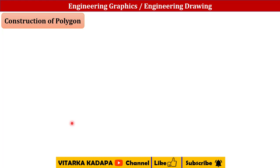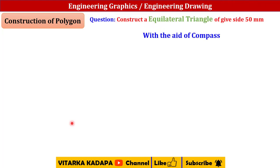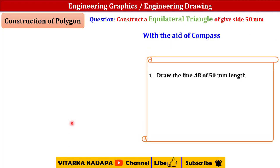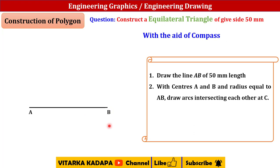Now let us construct an equilateral triangle of given side 50 mm using a compass. First, we draw a line AB of length 50 mm. Then, with centers A and B and radius equal to AB (50 mm), we draw arcs intersecting each other at point C. With center A and radius AB, I draw an arc like this.